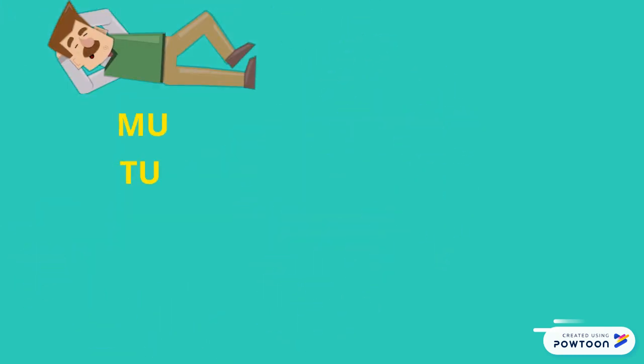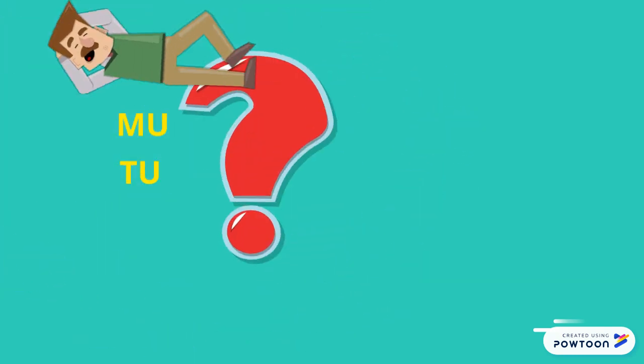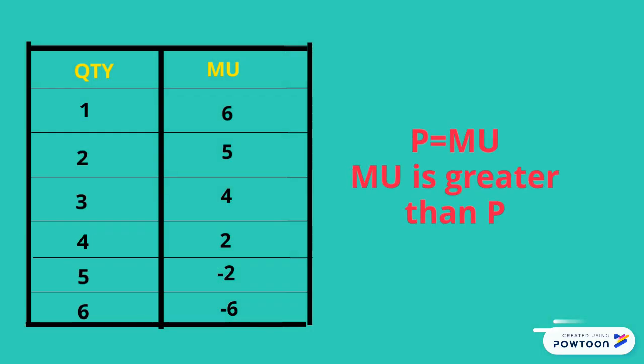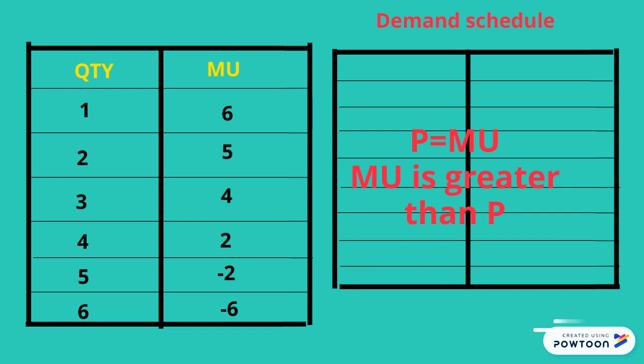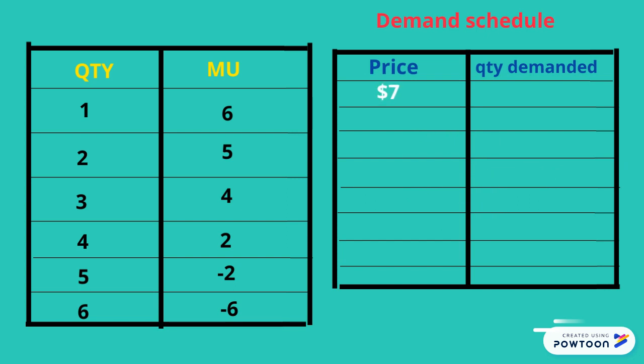Now that we know how to calculate marginal utility and total utility, the question is: how do we use this information to derive a demand curve? The rule is that price should be equal to your marginal utility, or your MU should be greater than the price, for consumers to buy the good. So if the price is $7, then we are looking at MU of 7 or more.